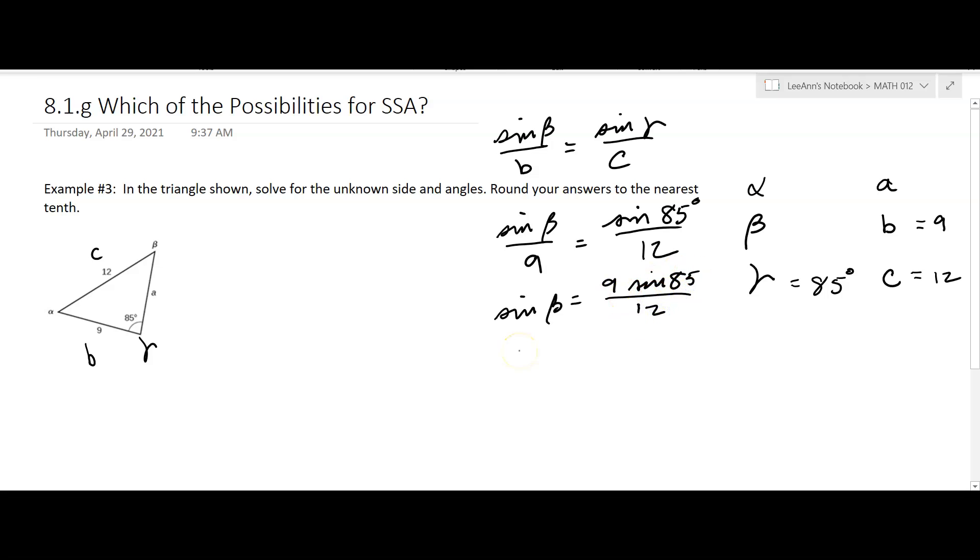And then we're going to say sine beta equals 9 times sine 85 over 12. And then we have to do an inverse sine to find beta. So inverse sine of 9 sine 85, and I'm putting those parentheses in to remind me to close off that parentheses.